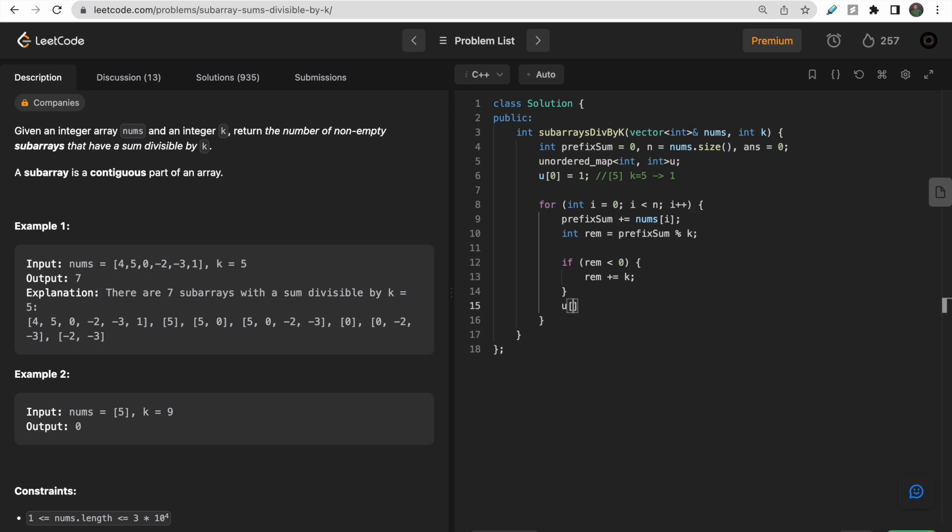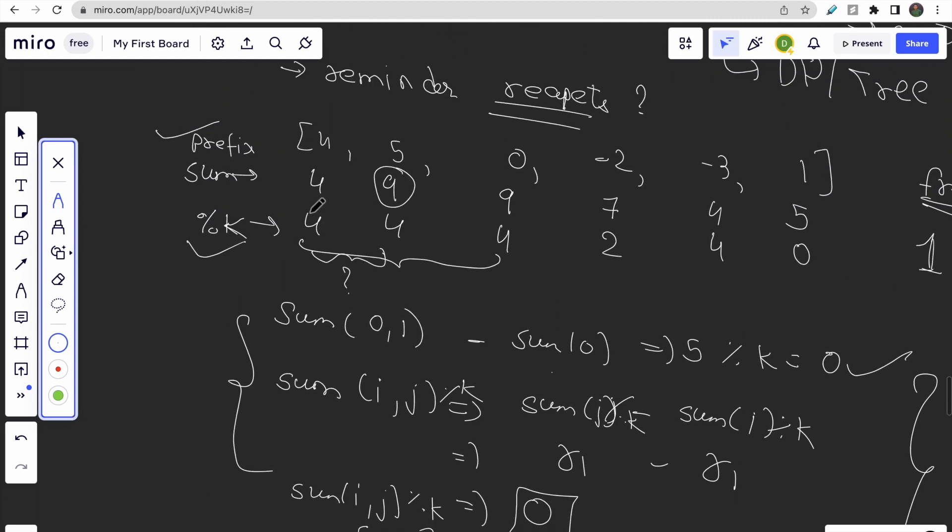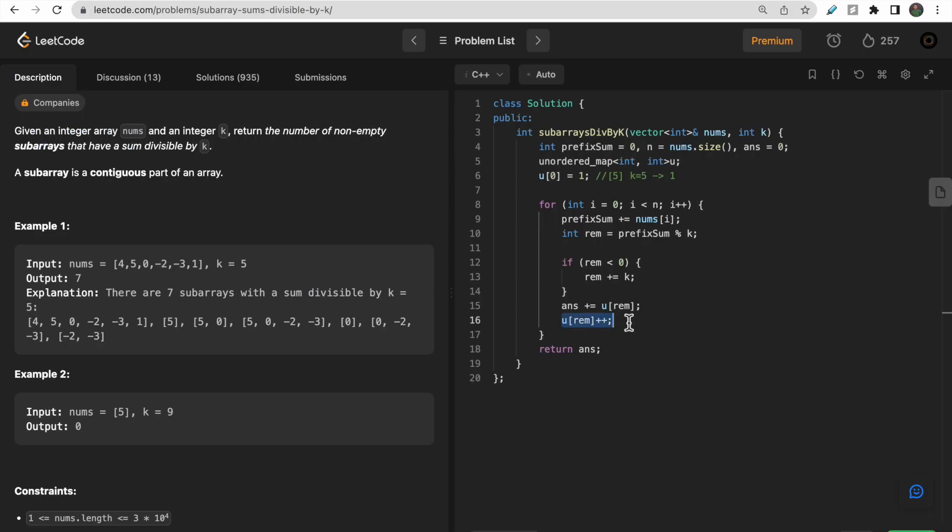And after that, we will make u[remainder]++. But before this, what we will do, we will simply take the frequency from u[remainder] and store it in our answer. And we will simply return the answer. We incremented the frequency afterwards. That's because we are finding the repetitive. So for the first time, the answer would be 0 and we won't store it. But the second time, we would store this frequency in our answer. And then increment the frequency. So that's why we incremented the frequency afterwards.